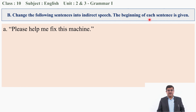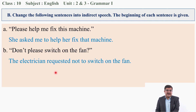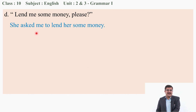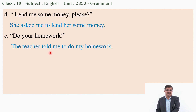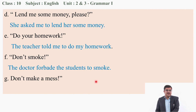Change the following sentences into indirect speech — the beginning of each sentence is given. 'Please help me fix the machine.' 'Don't switch on the fan.' 'Help me with my homework, please' — My friend requested me to help him with his homework. 'Lend me some money, please' — She asked me to lend her some money. 'Do your homework' — The teacher told me to do my homework. 'Do not smoke' — The doctor forbade the students to smoke. 'Do not make a mess' — My mother forbade us to make a mess.